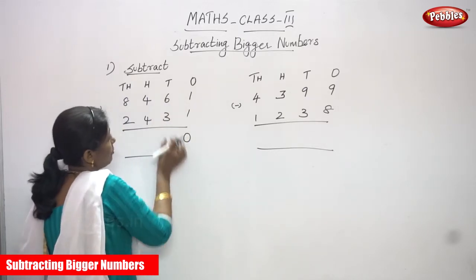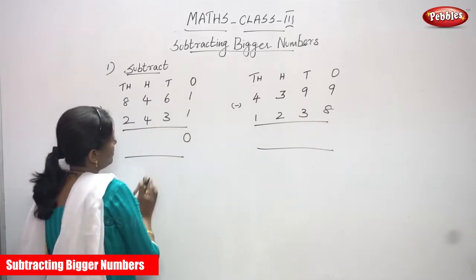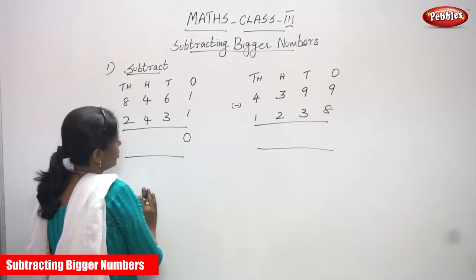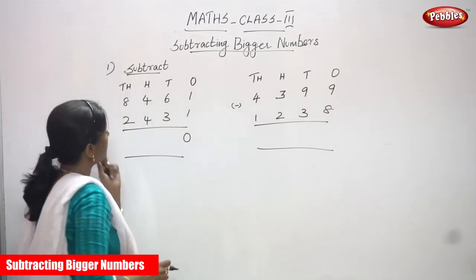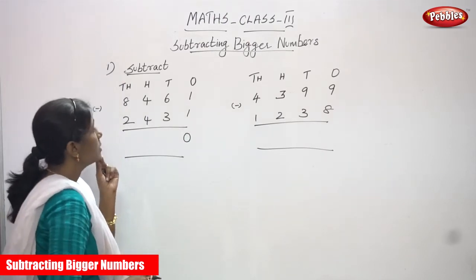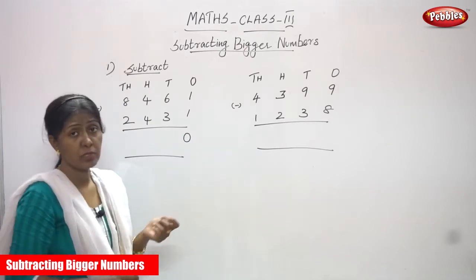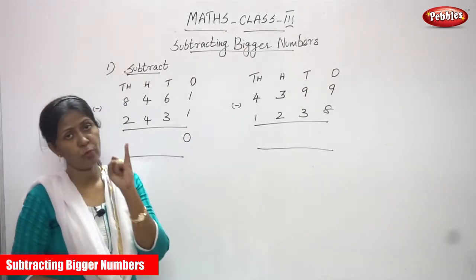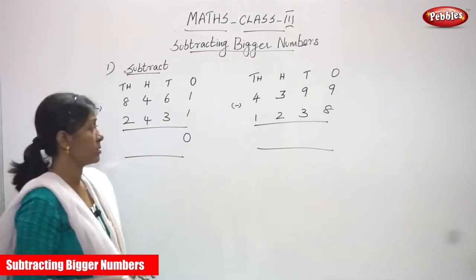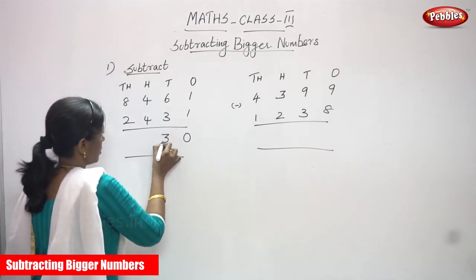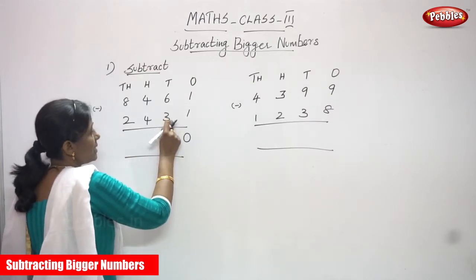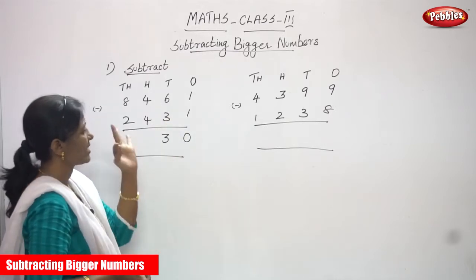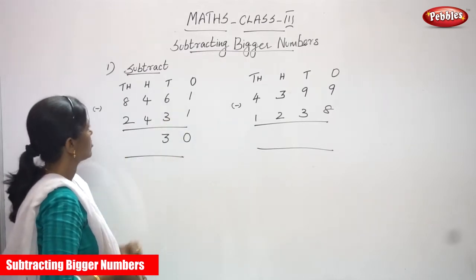I start with the tens place. What are the numbers in the tens place? 6 and 3. 6 is a bigger number, 3 is a smaller number. So you must do the backward counting. Start doing the backward counting after 3: 4, 5, 6. That is 3 steps, so the answer is 3.